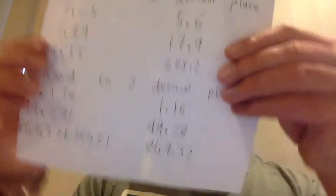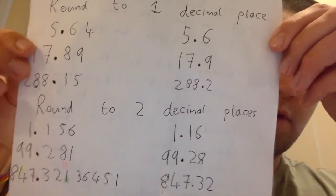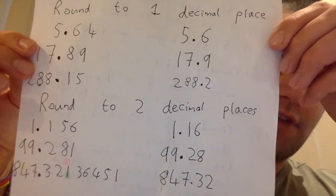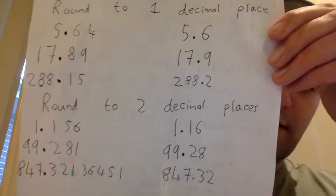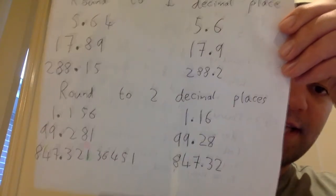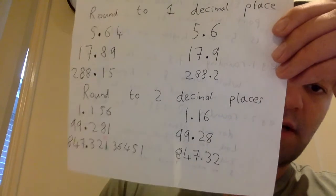So those would be your answers. So 1.156 would round up to 1.16. So the number after the second decimal place is a 6, that means we round up, so it becomes a 1.16.